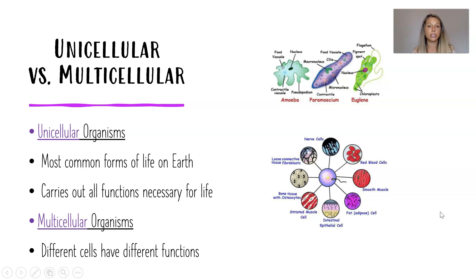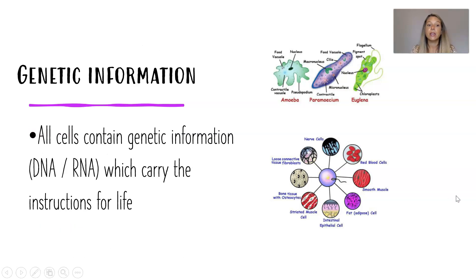Continuing on differences between unicellular and multicellular: unicellular organisms are actually the most common life forms on Earth, and that one single cell carries out all of the functions necessary for life. Multicellular organisms, however, have many different types of cells that all have different functions. Every cell — whether the organism is unicellular or multicellular — contains genetic information, typically DNA but sometimes RNA, which carries the instructions for life. In multicellular organisms every cell has the same DNA, but cells differ based on which genes are expressed or turned on.